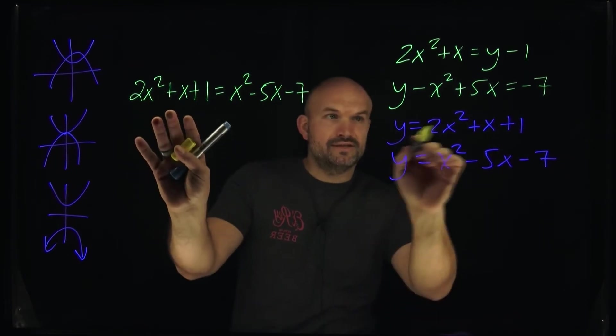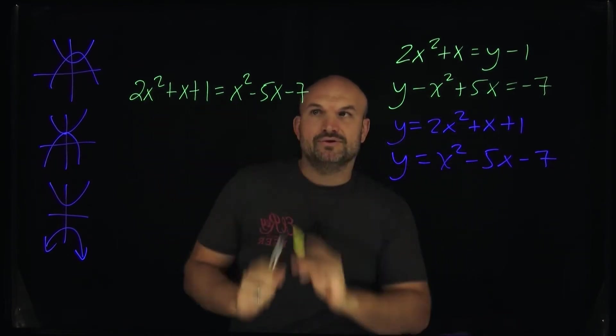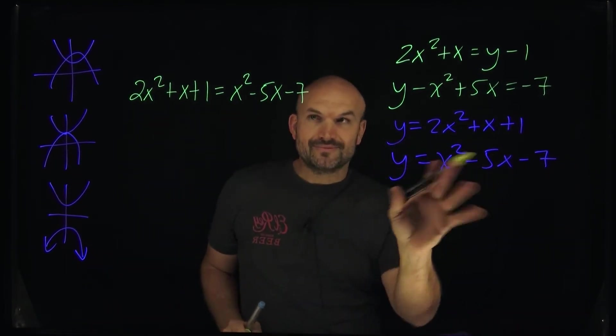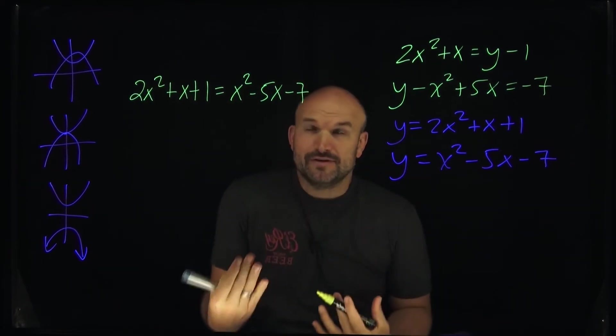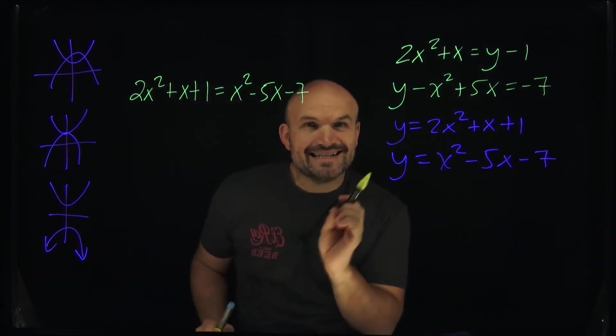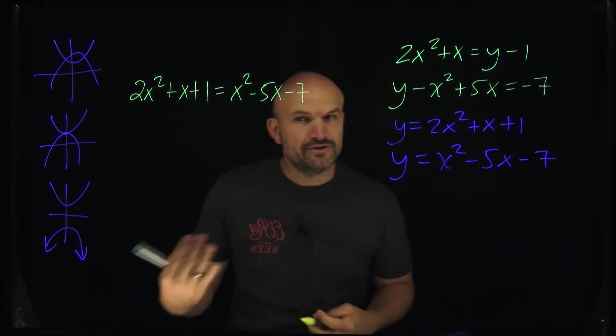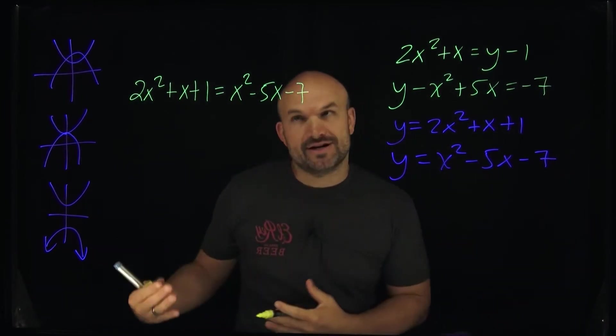So now you can see that I just took this top equation and I set it equal to the second equation. Now, you remember when you're solving a quadratic equation, what do you do? You get everything over to one side, set it equal to zero. Then you can either use factoring, completing the square, or the quadratic formula.